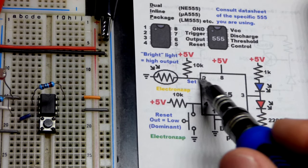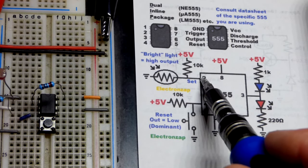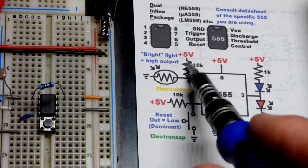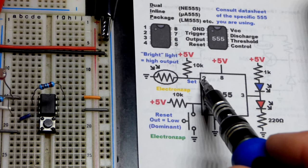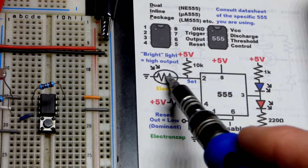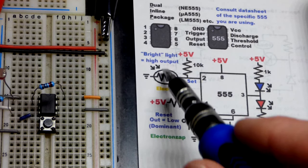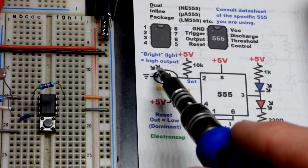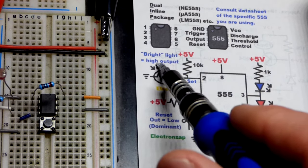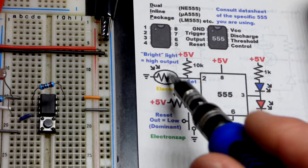This is a pull-up resistor, so it's keeping the voltage high and higher than one-third of the supply voltage best that it can and telling pin 2 not to do anything. But we also have the light dependent resistor. You get enough light on it, it conducts better. So bright light equals high output, it conducts better.